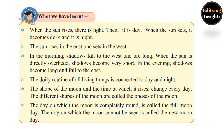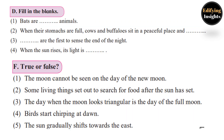Now let us solve the exercise. Fill in the blanks: 1) Bats are __ animals — nocturnal. 2) When their stomachs are full, cows and buffaloes sit in a peaceful place and __ — ruminate. 3) __ are the first to sense the end of the night — birds. 4) When the sun rises, its light is __ — soft.